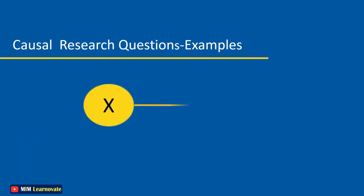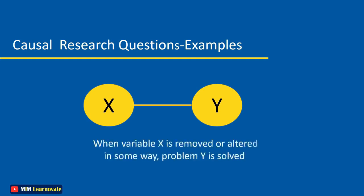The intention of a researcher conducting a causal study is to be able to state that variable X causes variable Y. So when variable X is removed or altered in some way, problem Y is solved.